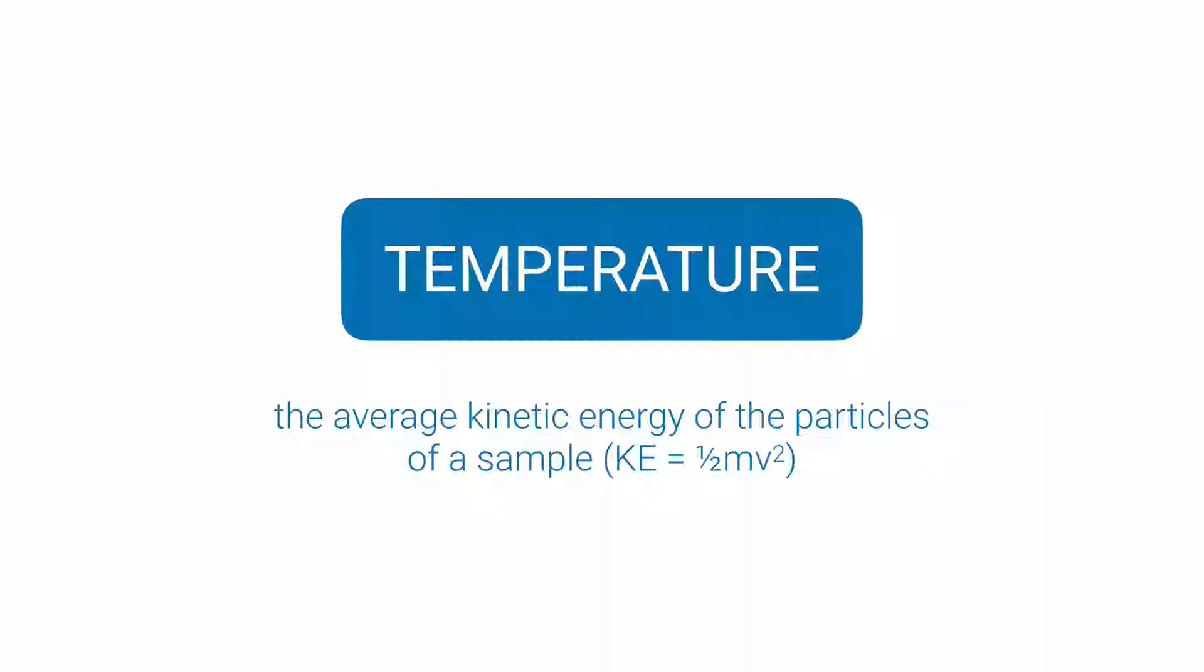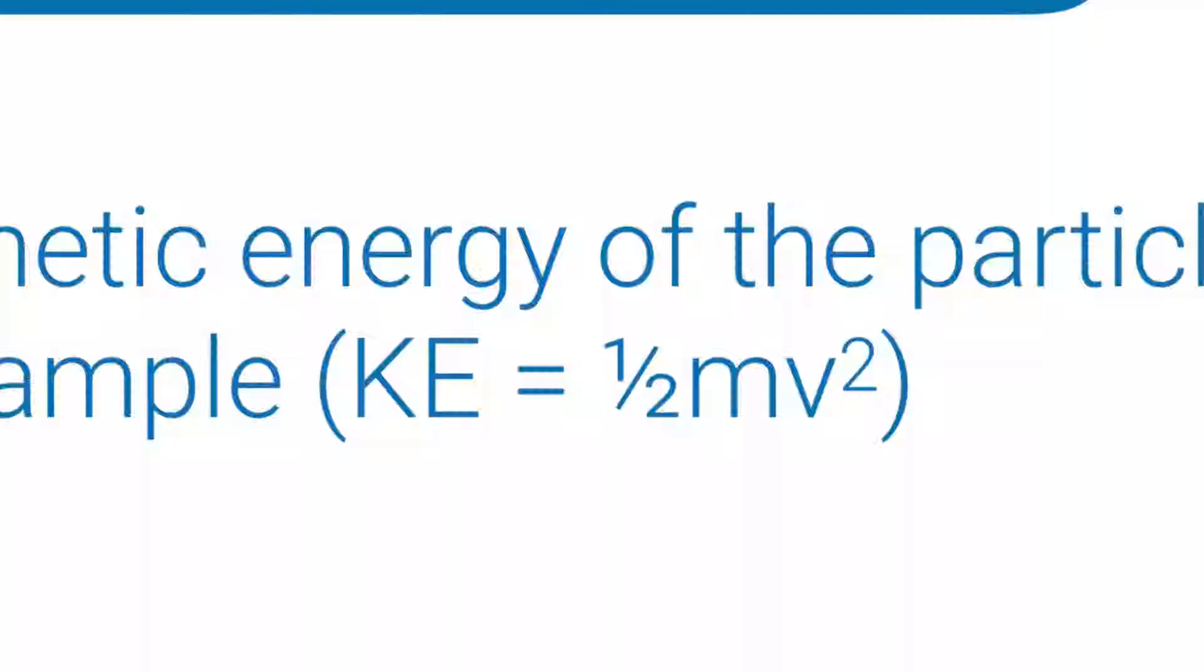Temperature is defined as the average kinetic energy of the particles of a sample. Now you may remember from introductory physics that the kinetic energy is calculated by taking half the mass and multiplying it by the square of a velocity.